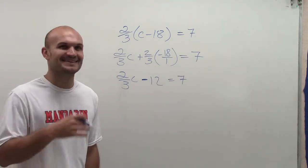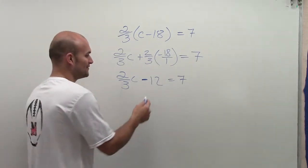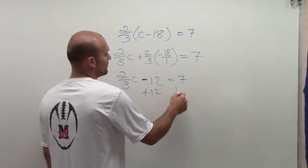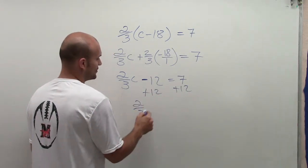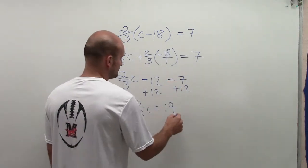I feel like I have to sneeze right here. I'll try to keep this going. So subtracting by 12, to undo that, I'm going to add 12 onto both sides. Therefore, I'll have 2/3 c equals 7 plus 12 is 19.